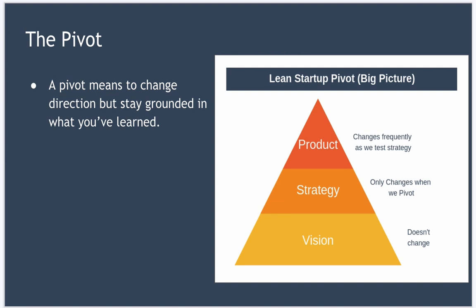In Lean Startup, a pivot means to change direction but to stay grounded in what you've learned. To build a thriving business, you need a clear vision. You also need a strategy to realize this vision — that consists of things like a business model, a product plan, and types of customers you want to attract. Changing your strategy is known as a pivot, but that doesn't mean your vision changes. As you can see in this diagram, your product changes all the time as you update your MVP to test your latest hypothesis and get feedback. Only if your metrics aren't making progress — if your innovation accounting isn't moving you forward — do you pivot by changing your strategy. But your vision never changes.